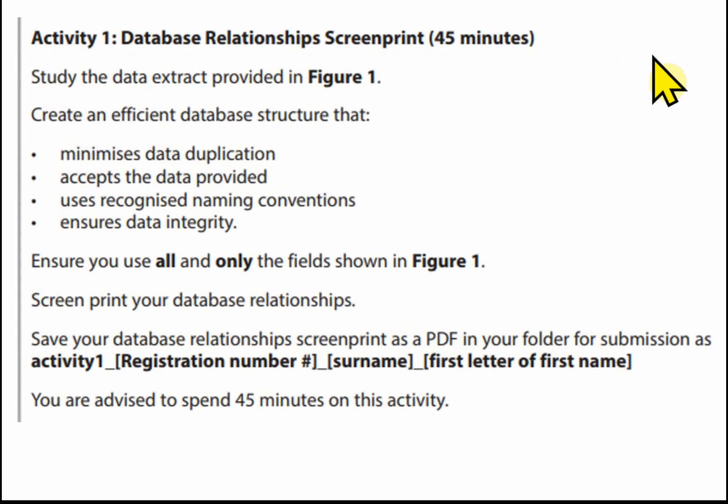It says study the data extract provided in Figure 1. We've actually done that in the design phase, and we need to create an efficient database structure that minimises data duplication, accepts the data provided, uses recognised naming conventions, and ensures data integrity. In going through the design phase, we've minimised data duplication — each item of data is stored in one place only, with the exception of foreign keys. Our database should accept the data provided because we're going to include all the fields, and we'll use a standard naming format for field names.